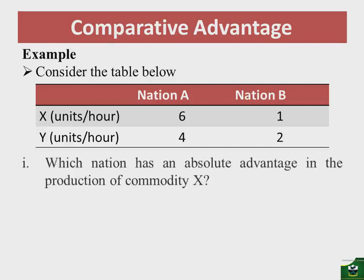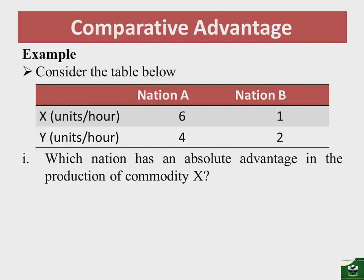If you said nation A, you are right. Nation A produces six units of X in an hour, while nation B uses the same hour to produce only one unit of X, which means nation A is more efficient in producing commodity X than nation B. So nation A has an absolute advantage in the production of commodity X.